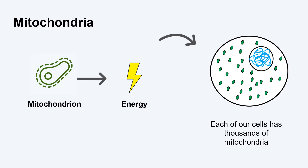Mitochondria are the energy factories of our cells. They take the oxygen and the food we eat and turn it into energy that our cells can use. Aside from our nuclear DNA, mitochondria also have their own genetic material. We call this mitochondrial DNA, or mtDNA, which also makes proteins that are needed for mitochondria function. Some of our nuclear DNA codes for proteins that are important for our mitochondria.